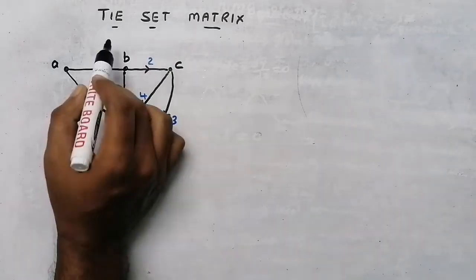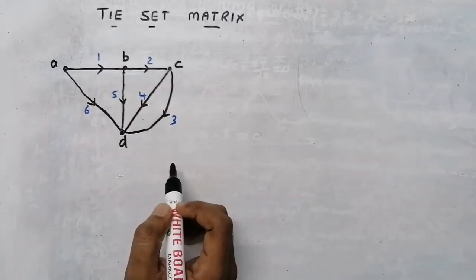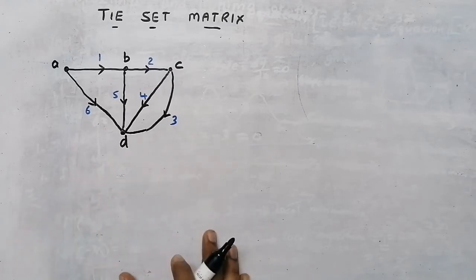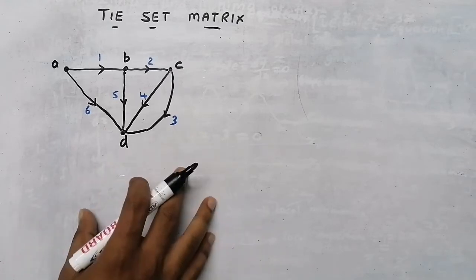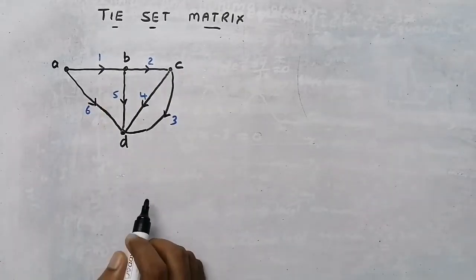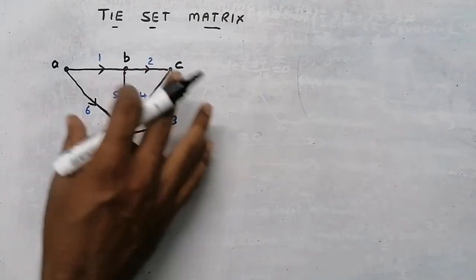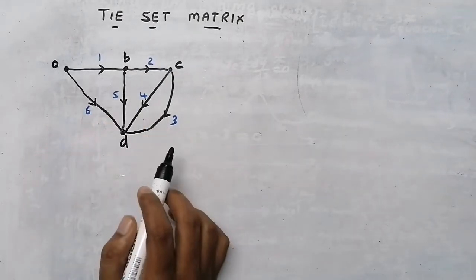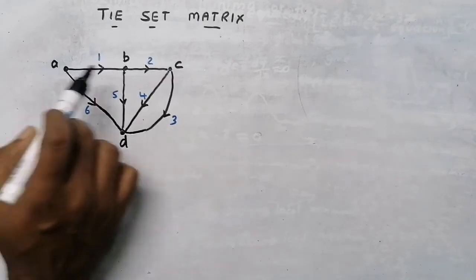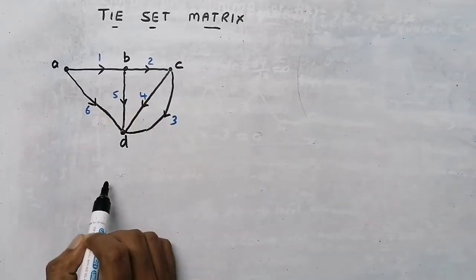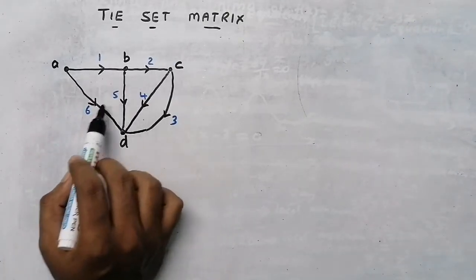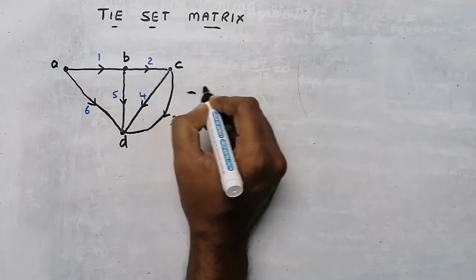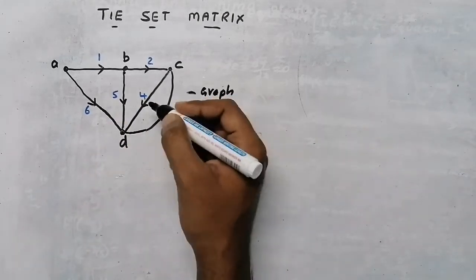In this video we are going to learn about tie-set matrix. In the previous video we discussed how to draw a graph, how to find incidence matrix and all. In this video we are going to learn about tie-set matrix. Suppose in the question they have given us a graph — this is a directed graph, so directions are there. In this graph, A, B, C and D are the nodes; 1, 2, 3, 4, 5 and 6 are the branches.